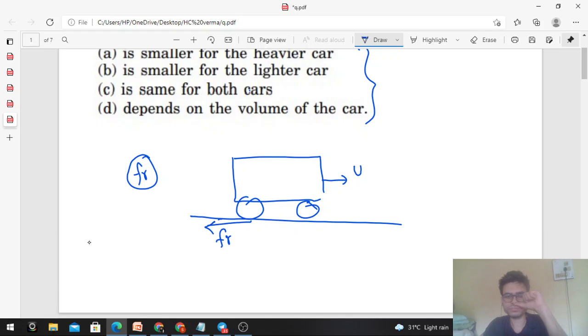Friction is a self-adjusting force. So if we need minimum stopping distance, we need maximum retardation.